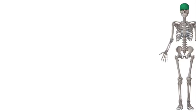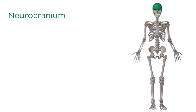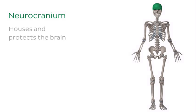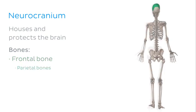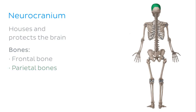The neurocranium refers to the portion of the skull that houses and protects the brain. We're going to look at three bones of the neurocranium, including the frontal bone. If we flip our skeleton to view it from behind, we can see the two other bones: the paired parietal bones and the occipital bone. It's worth noting that the temporal bone, the sphenoid bone, and the ethmoid bone also make up part of the neurocranium, but will not be discussed in this tutorial.